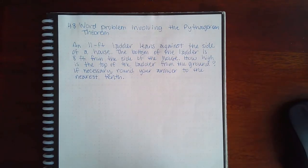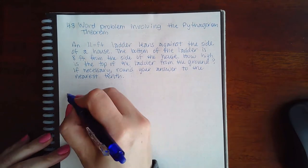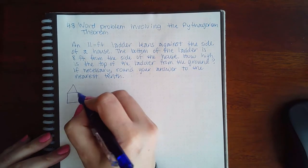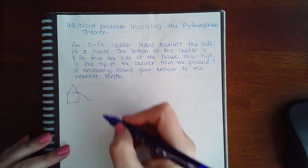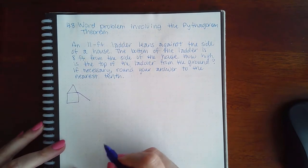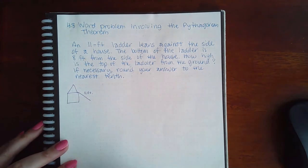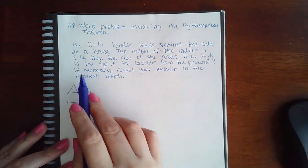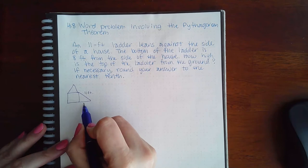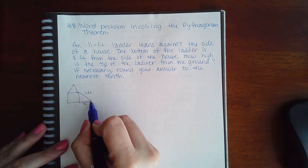Here we have a 4.8 word problem involving the Pythagorean theorem. We have an 11-foot ladder leaning against the side of a house. Let me draw my elementary school house and then my ladder. The ladder is 11 feet, and the bottom of the ladder is 8 feet from the side of the house.